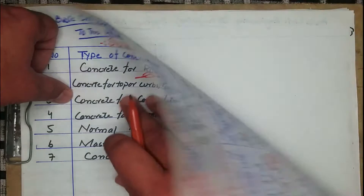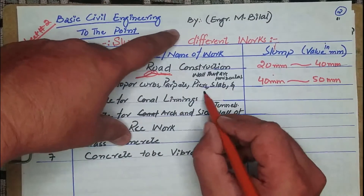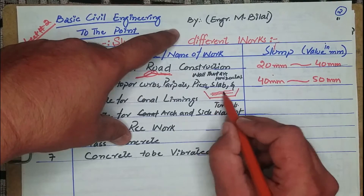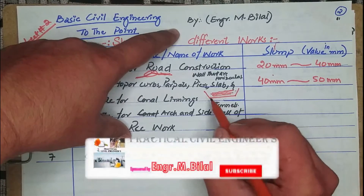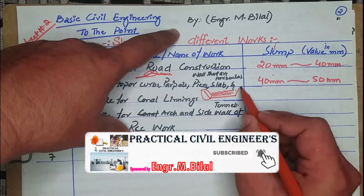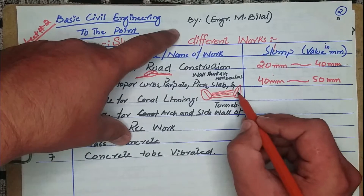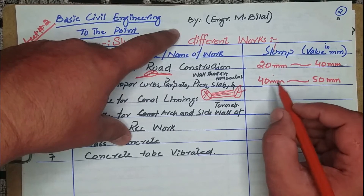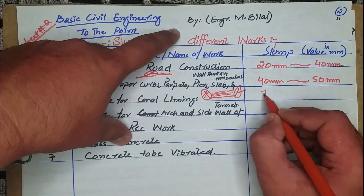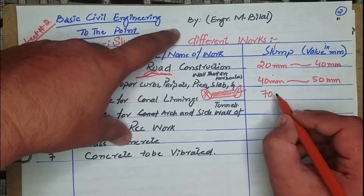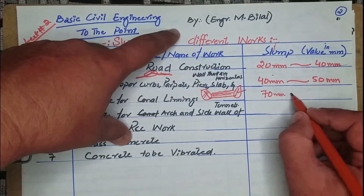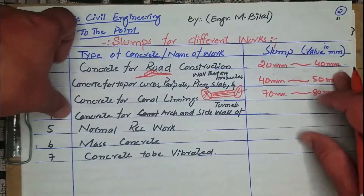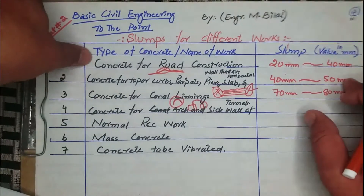The third one is concrete for canal lining. A canal lining is the concrete layer applied inside a canal through which water flows. The minimum and maximum slump for canal lining concrete is 70 mm to 80 mm.